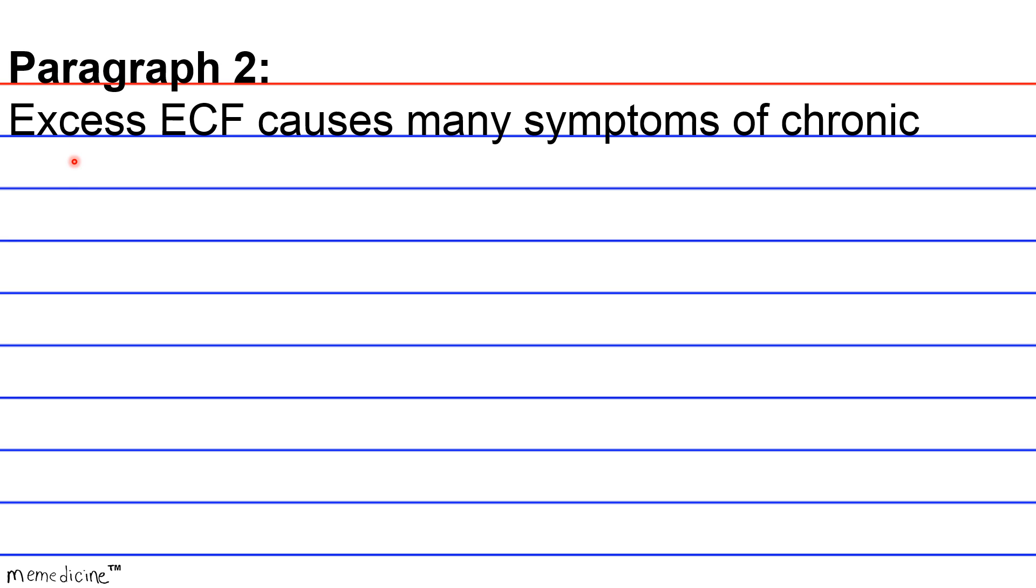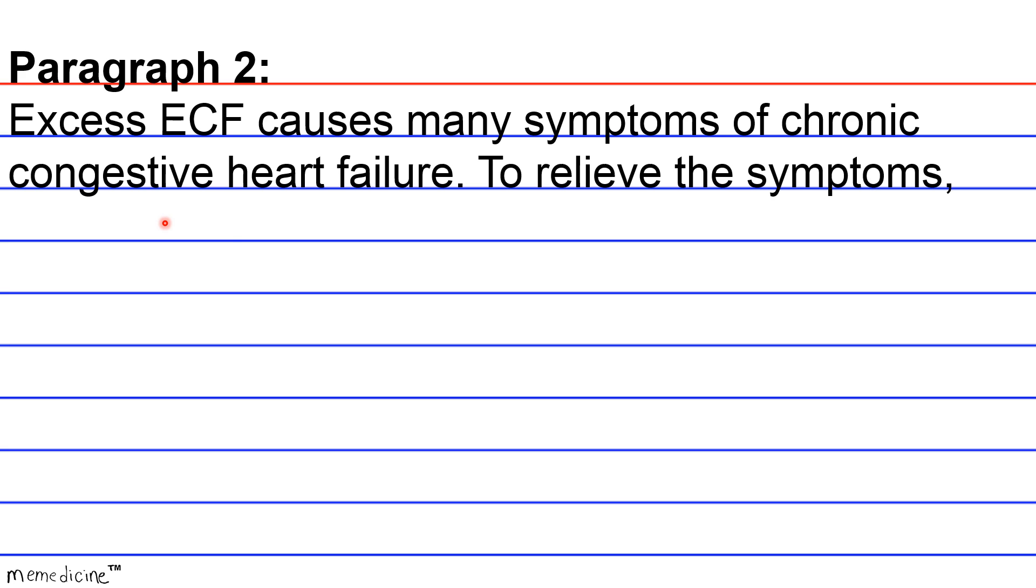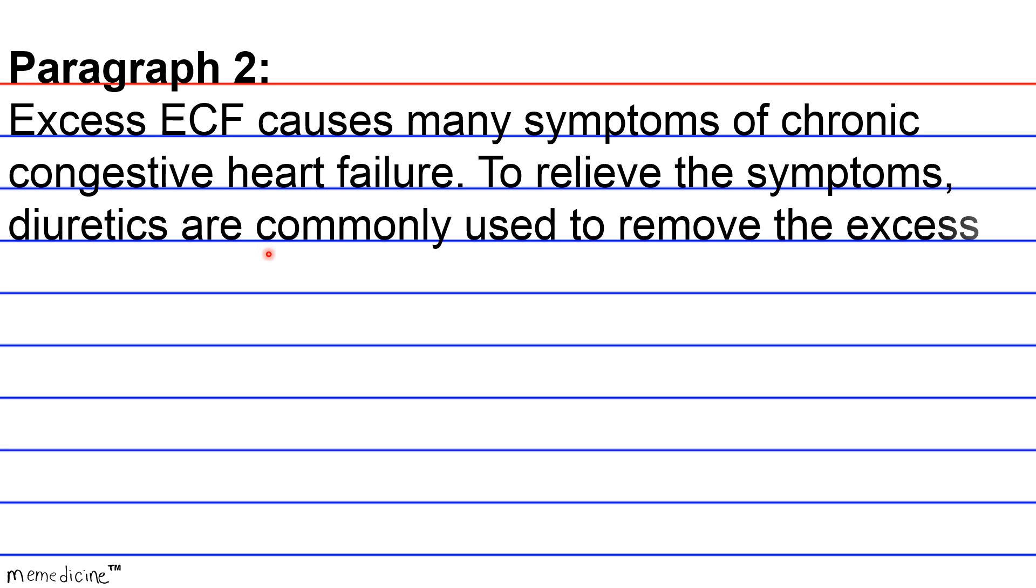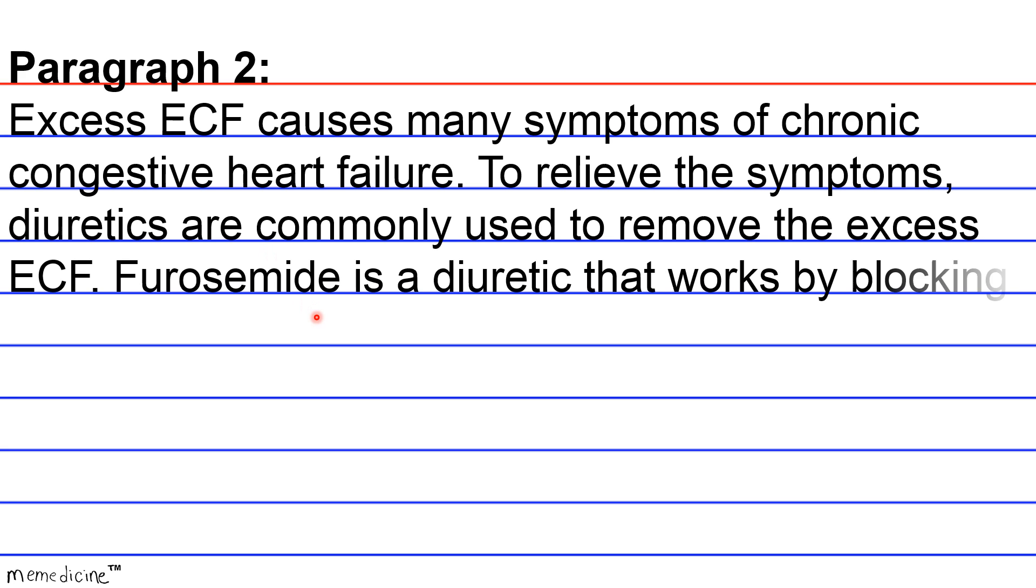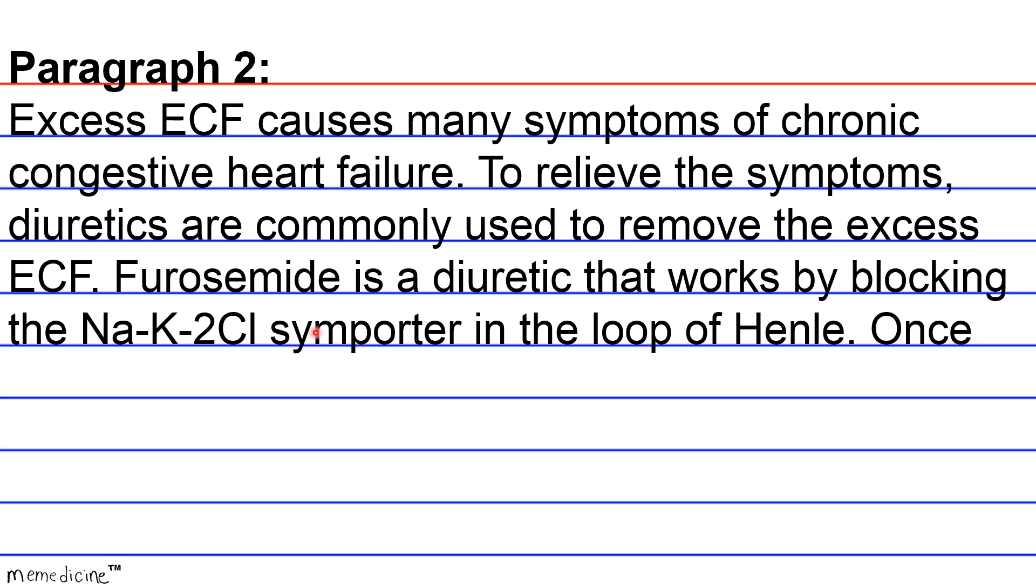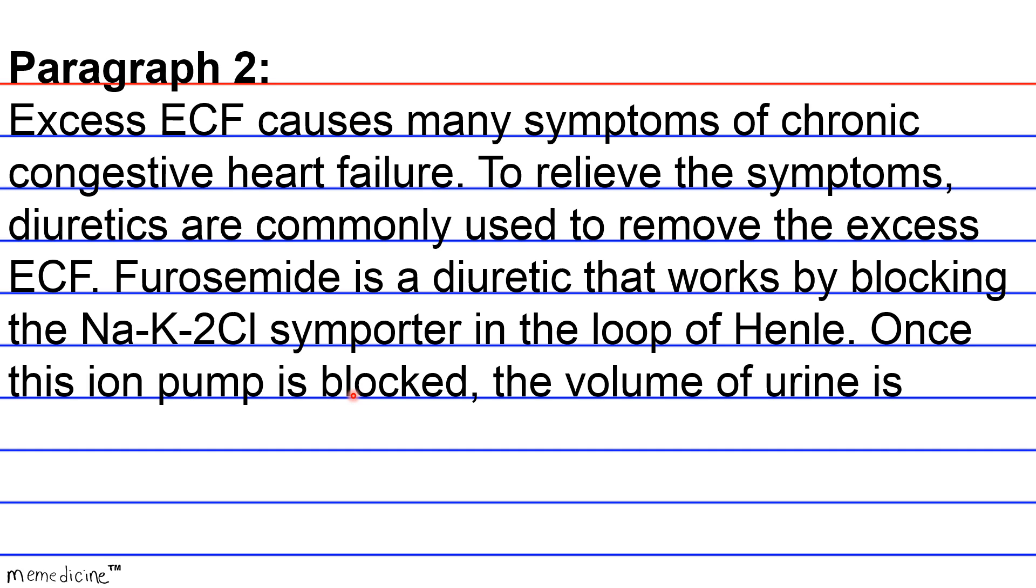Paragraph 2: Excess ECF causes many symptoms of chronic congestive heart failure. To relieve the symptoms, diuretics are commonly used to remove the excess ECF. Furosemide is a diuretic that works by blocking the sodium-potassium-2-chloride symporter in the loop of Henle. Once this ion pump is blocked, the volume of urine is increased and the amount of ECF is reduced.